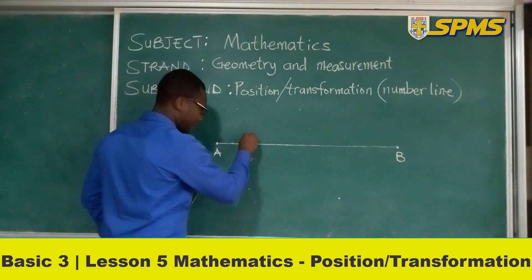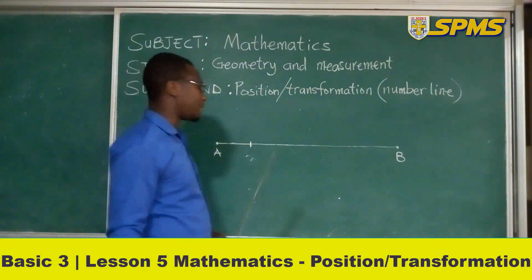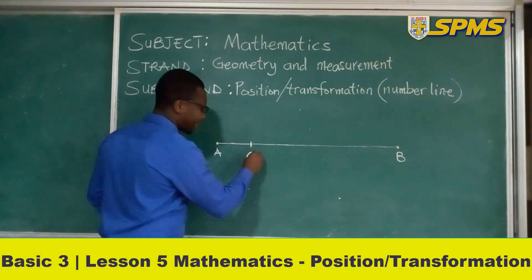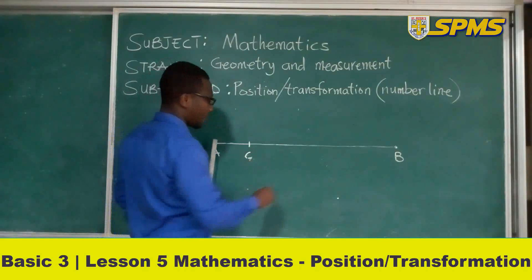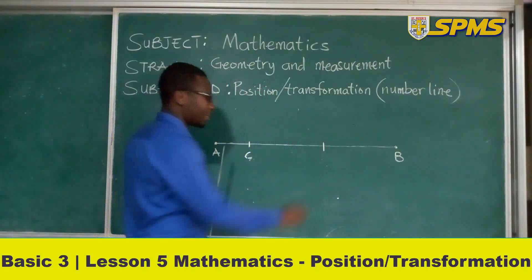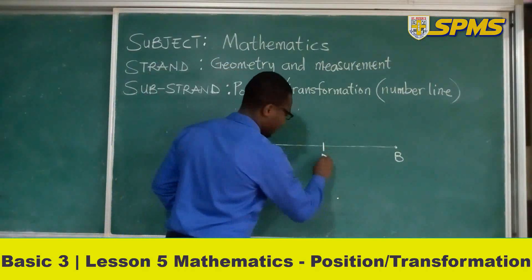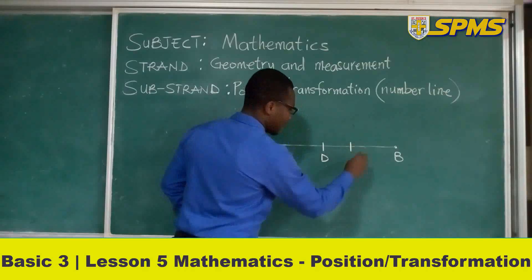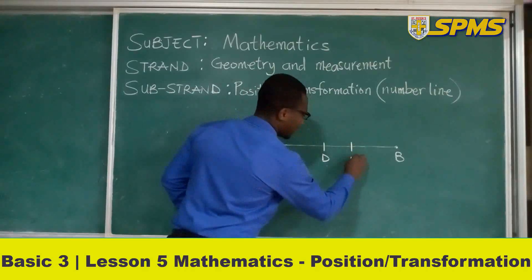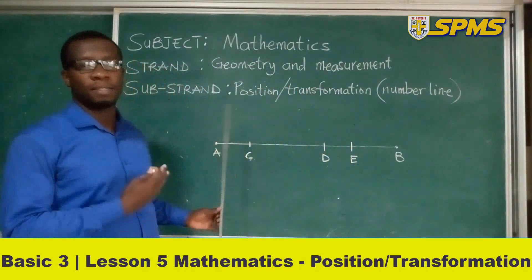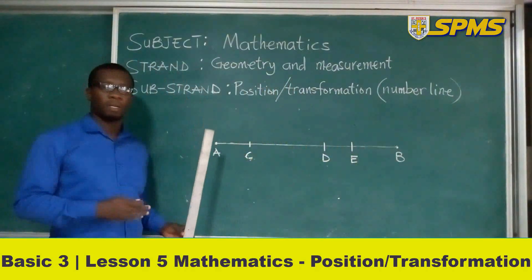Now the segments can be found on the line. So we can have our tick mark as first tick mark as C. We can also have another tick mark as D. Then we can have a closer one to D as E. These are segments on a line.